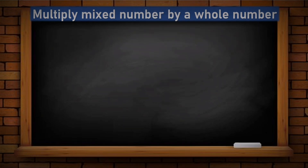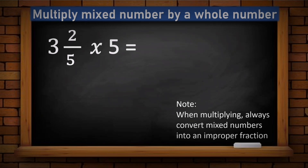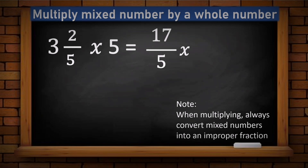Example five: multiplying a mixed number by a whole number. Given three and two fifths times five. Convert the mixed number: five times three plus two is seventeen, so seventeen over five. The denominator of the whole number five is one, giving five over one. Using cancellation — five and five cancel: five divided by five is one on both sides. Multiplying: seventeen times one is seventeen, one times one is one. The final answer is seventeen.